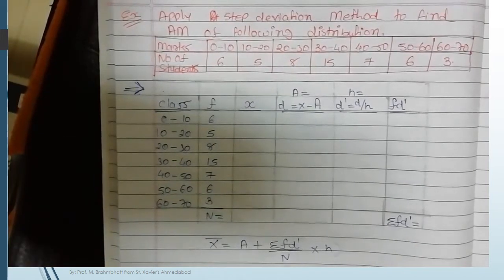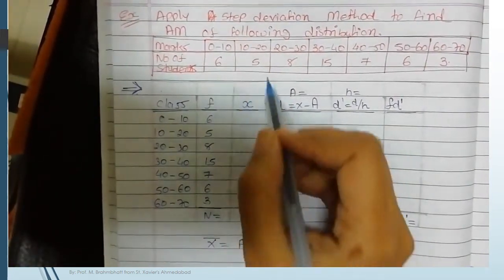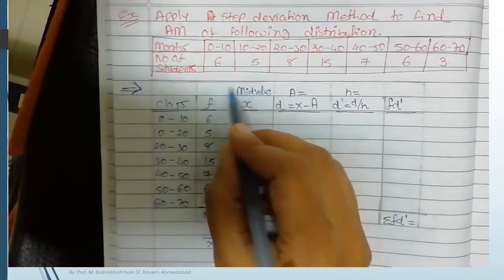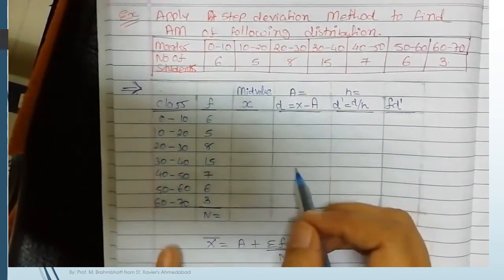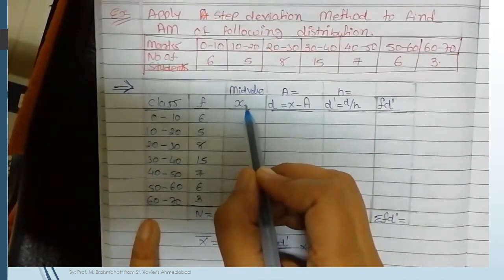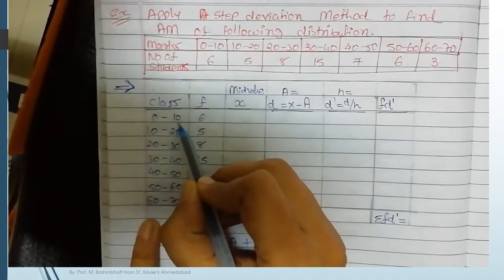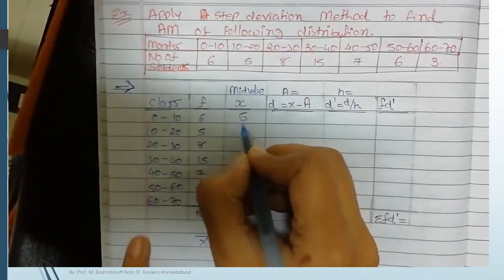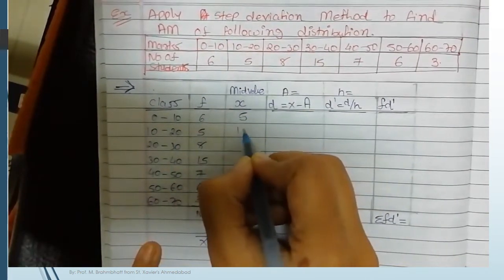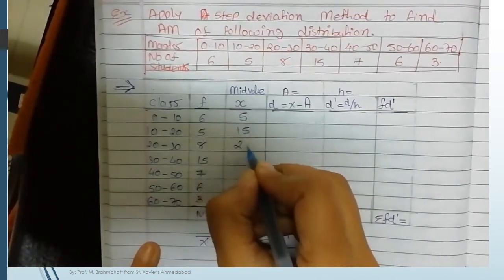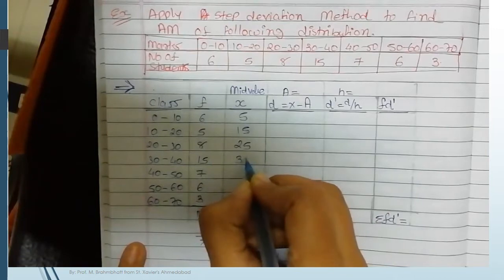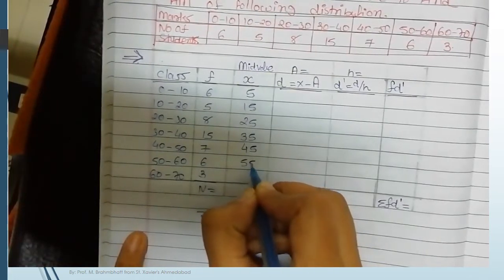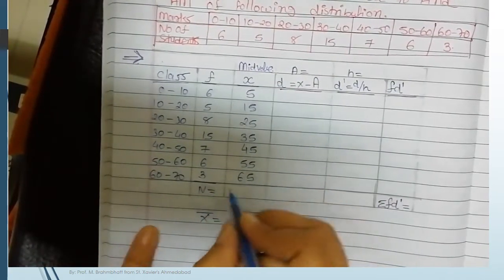First, find x, the mid value, from each class interval. To find x, calculate l1 plus l2 divided by 2. So 0 plus 10 divided by 2 is 5; 10 plus 20 divided by 2 is 15; similarly the mid values for the remaining classes are 25, 35, 45, 55, and 65.